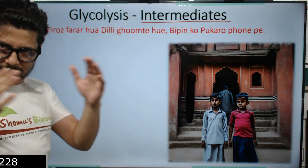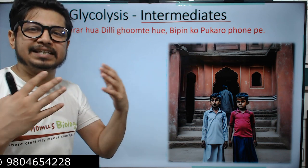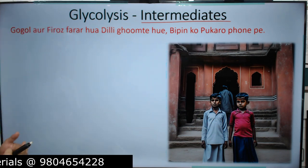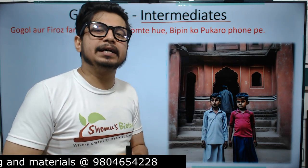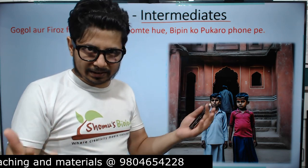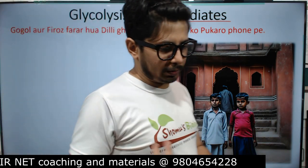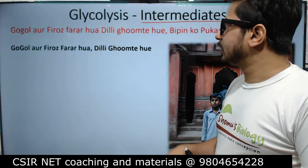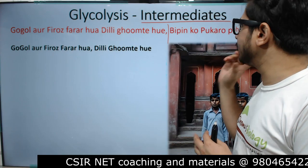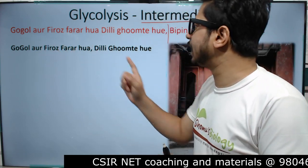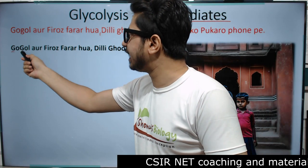The mnemonic is: 'Gogol or Feroz farar hua, Delhi ghunte huye, Vipin ko pukaro phon pe.' This is a long sentence but if you picturize it you'll easily remember the intermediates of glycolysis. The story is: two friends Gogol and Feroz are lost in old Delhi — call Vipin over the phone. Again, the capital letters represent the starting letters of the intermediates.